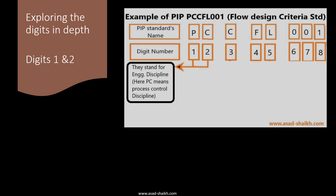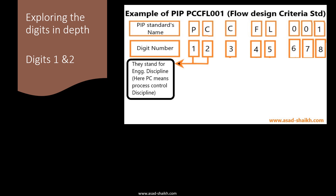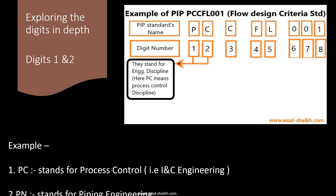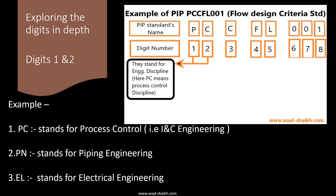The first two digits stand for the engineering discipline the standard caters to. For example, PC stands for process control — that is, instrumentation and control engineering. If the first two digits were PN, it would stand for piping engineering. EL stands for electrical engineering. Similarly, every discipline — project engineering, process engineering — has different digits representing that particular discipline.